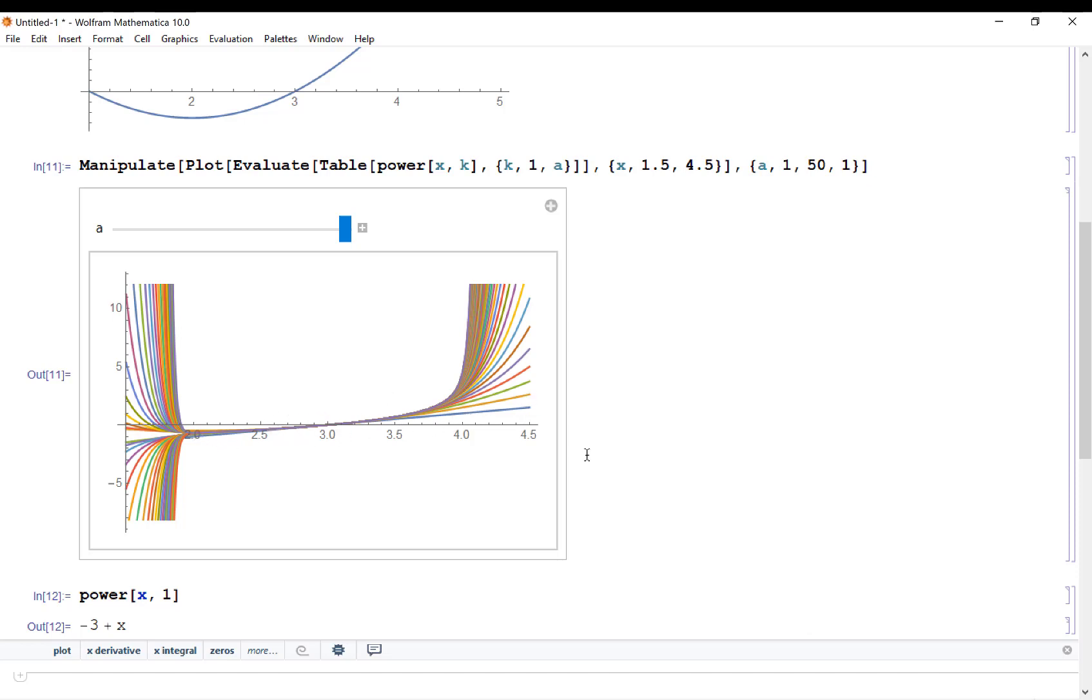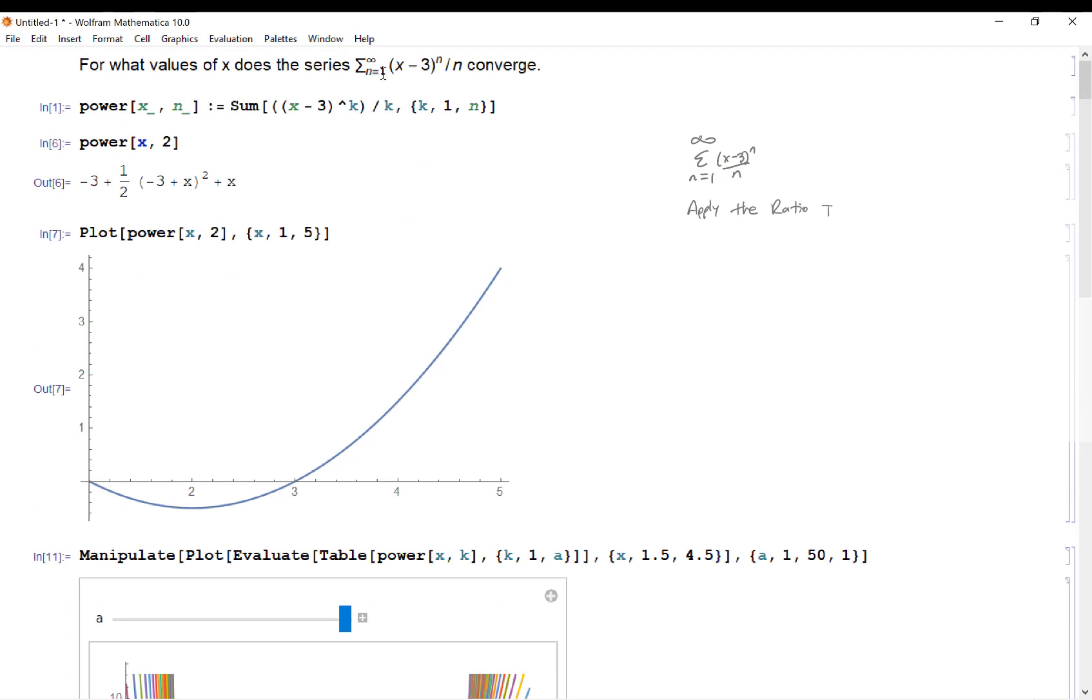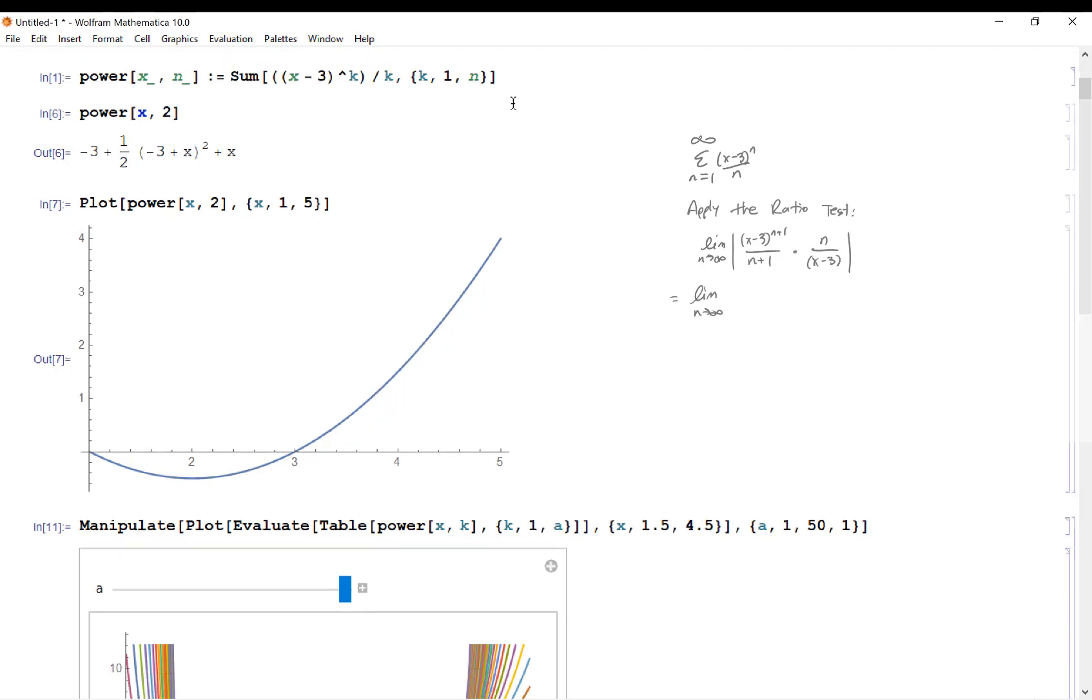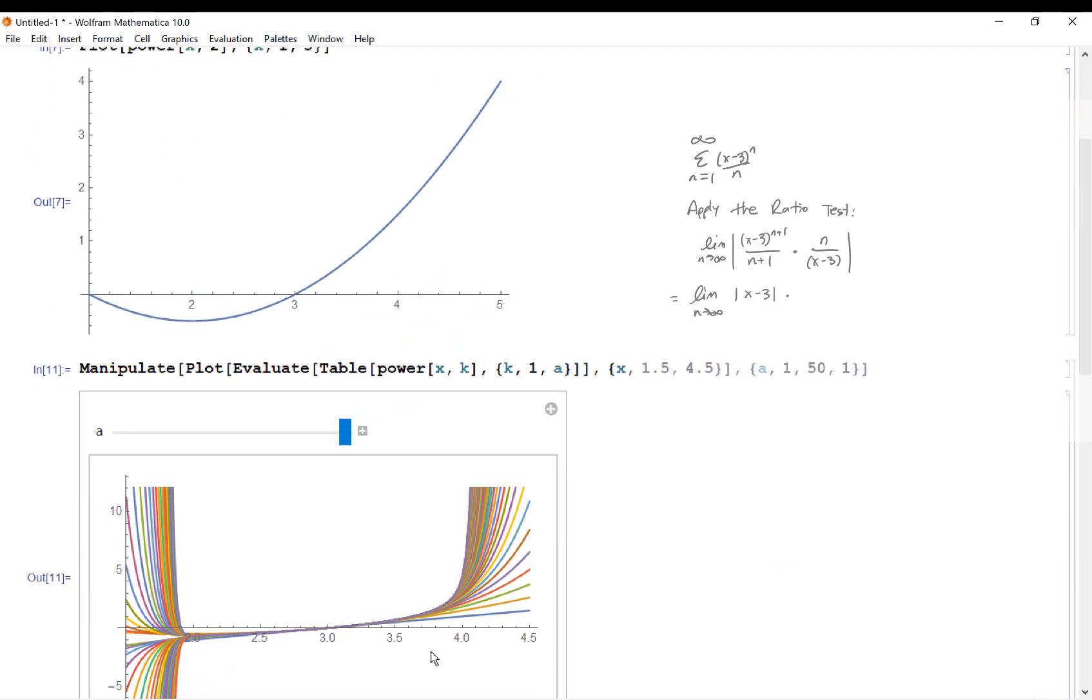And this is just a good visual of the radius of convergence of a power series. So if you're going to work out the mathematics behind this particular series, we would use the ratio test. We get a radius of convergence of 1. We're centered at 3. So that means we'd go 3 minus 1 down to 2.